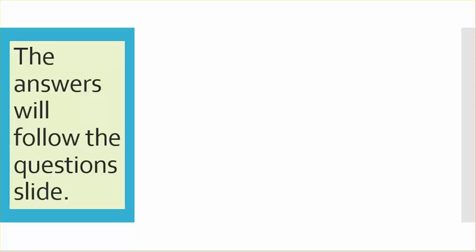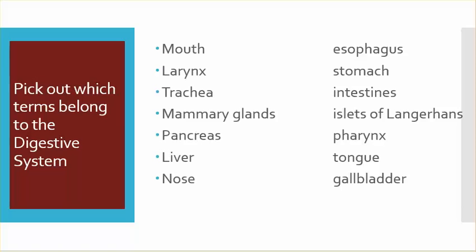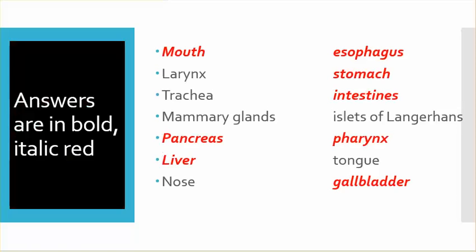The answers will follow the question slide. Pick out which terms belong to the digestive system. The answers are in bold italic red, and they are the mouth, esophagus, stomach, intestines, pancreas, liver, pharynx, and gallbladder.